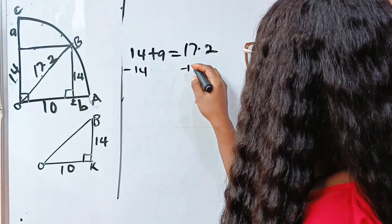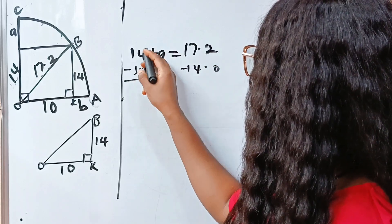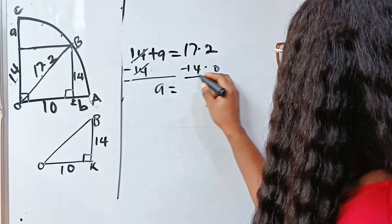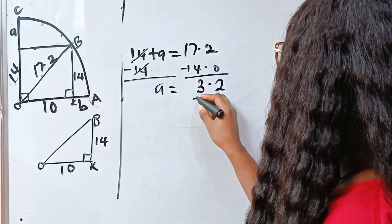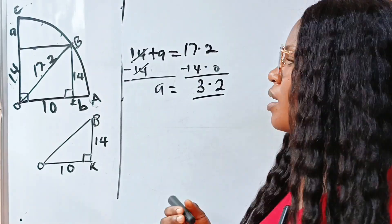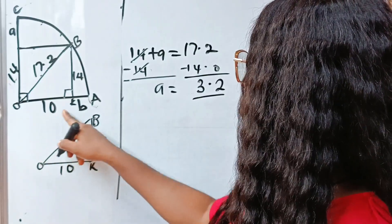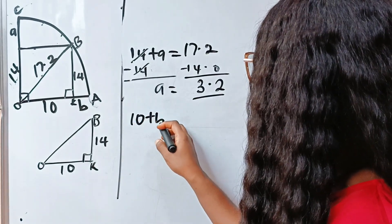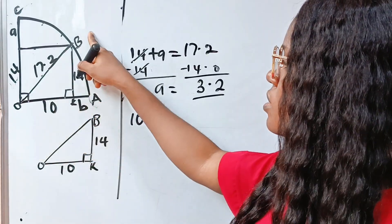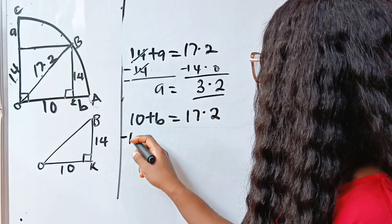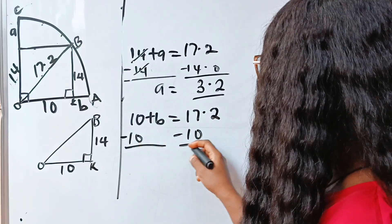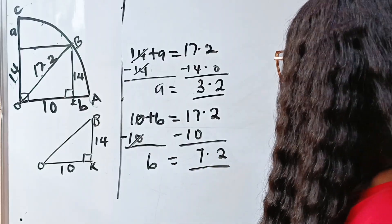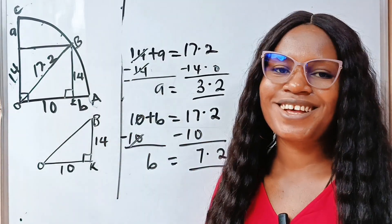Subtracting 14 from both sides gives A = 17.2 − 14 = 3.2 units. Similarly, OA — which is 10 + B — is also the radius of this circle, so 10 + B = 17.2. Subtracting 10 from both sides gives B = 7.2. So A = 3.2 and B = 7.2. Thank you so much for watching.